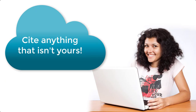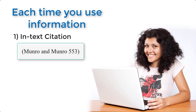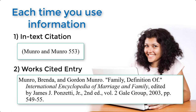MLA also has rules about citing any information used in your paper that isn't yours. Each time you use information that is not your own, you must include two things in your paper: one, an in-text citation with brief information about the source, and two, an entry on the Works Cited page with the full details about the source.